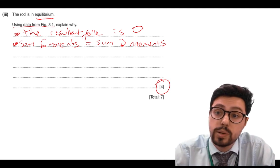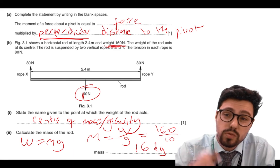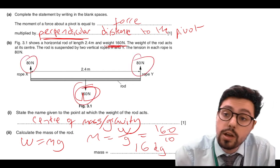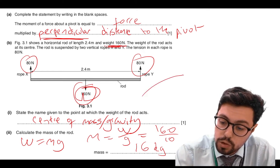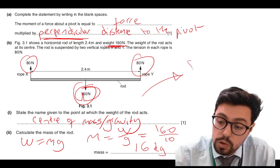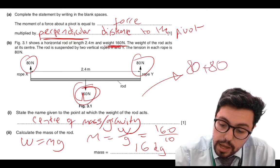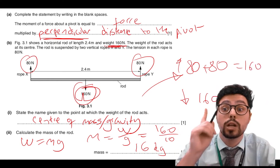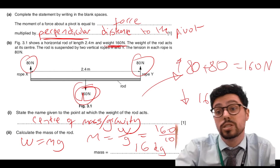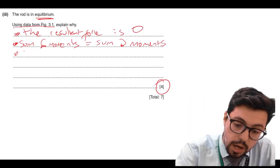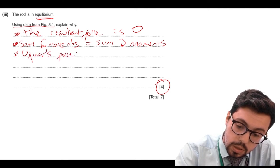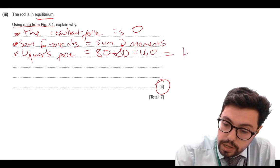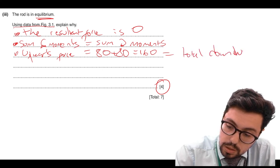They've asked us to use data to explain why. For the resultant force, I look at all the forces on the object — there are three forces. The total upwards force is 80 plus 80 equals 160 newtons, and the total downwards force is 160 newtons. So the upwards force equals 160 newtons, which equals the total downwards force.